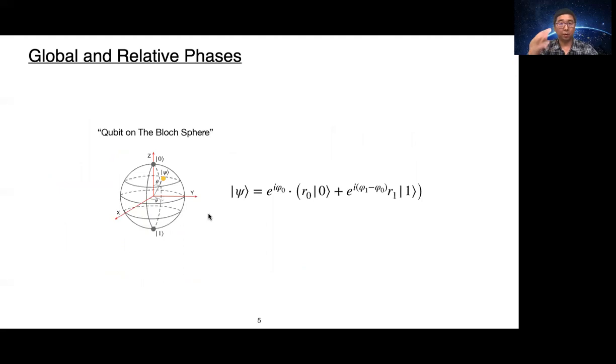Let's zoom in on the qubit. We can factor out the quantum phase e to the i phi 0 from both coefficients. We call this e to the i phi 0 the global phase and e to the i phi 1 minus phi 0 the relative phase. Then we can simplify the equation to the global phase times psi tilde.